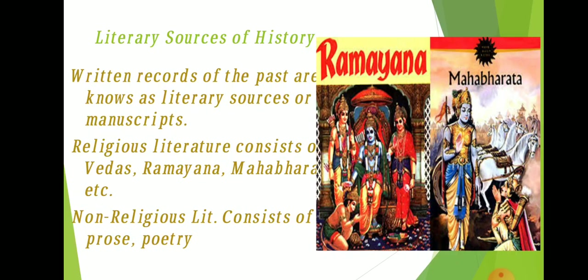Secular literature is another source that throws light on the life of people of that period. The accounts of events by foreign pilgrims and travellers like Fahiyan, and ambassadors like Megasthenes who visited India in earlier times, are also important sources of information about ancient Indian history and culture. They stayed many years in our country and wrote about the condition of the people and their culture.